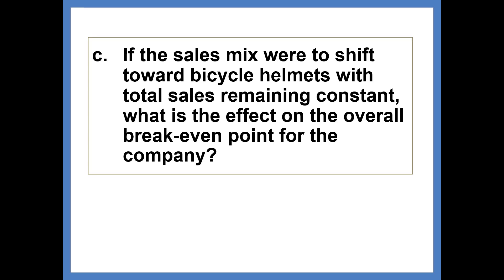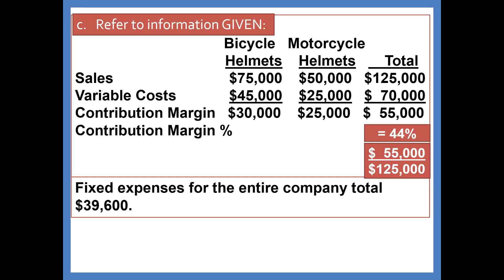If the sales mix were to shift toward bicycle helmets with total sales remaining constant, what is the effect on the overall break-even point for the company? Well, this will be determined by whether bicycle helmets are the most profitable or the less profitable product. We see that we have greater sales from bicycle helmets, but that does not mean they're the most profitable. The best indicator of profitability is the contribution margin ratio for each individual product line.